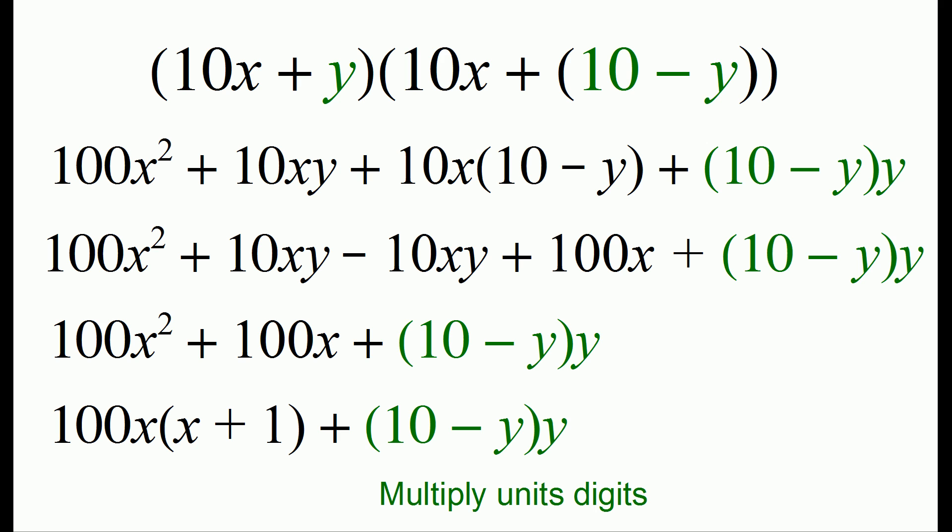When we factor out the 100x we get 100x times x plus 1 plus 10 minus y times y. So the quantity in green, this is multiplying the units digits together, y and 10 minus y, and the quantity in black is multiplying x times x plus 1. So that's where we get our rule.